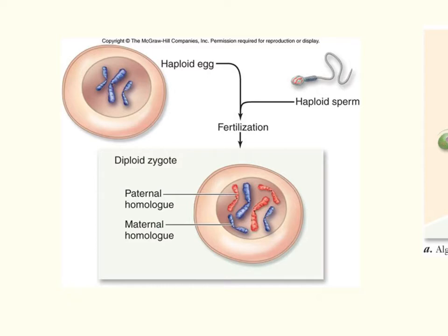The zygote will have half paternal chromosomes and half maternal chromosomes. The purpose of fertilization is to increase genetic variability. Sexual reproduction produces offspring by alternating between diploid and haploid states, and the length of these states varies between organisms.